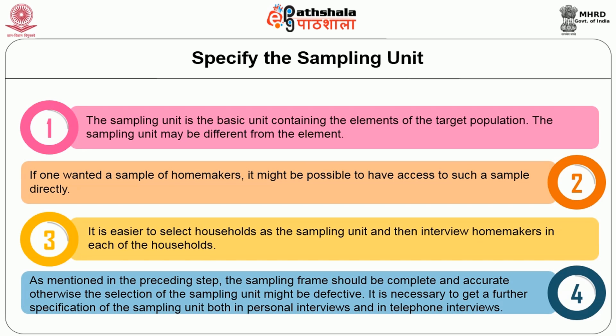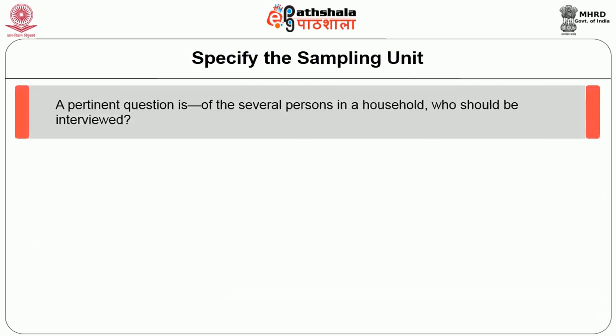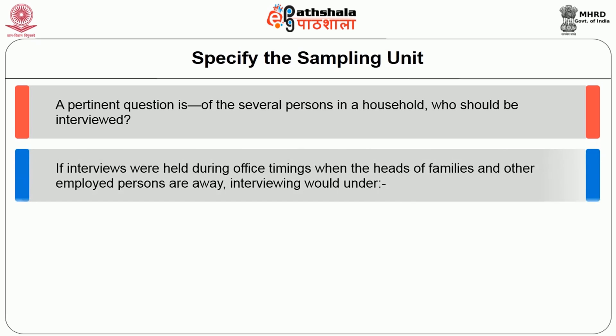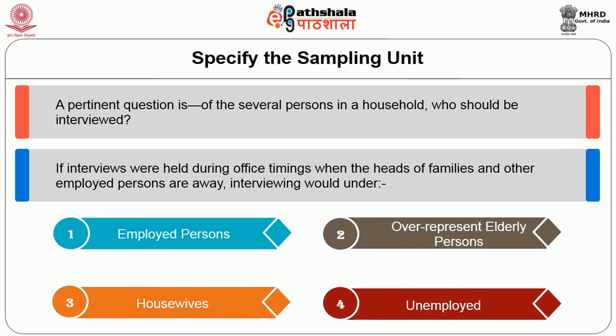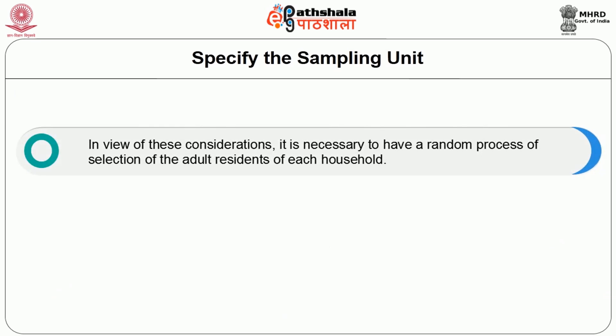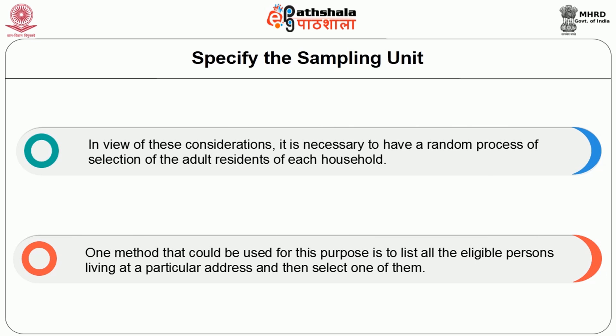It is necessary to get a further specification of the sampling unit in both personal and telephone interviews. In personal interviews, a pertinent question is: of the several persons in a household, who should be interviewed? If interviews are held during office hours, heads of families and employed persons are away, meaning interviewing would under-represent employed persons and over-represent elderly persons, housewives, and the unemployed. Therefore, it is necessary to have a random process of selecting adult residents of each household — for example, listing all eligible persons at an address and selecting one of them.